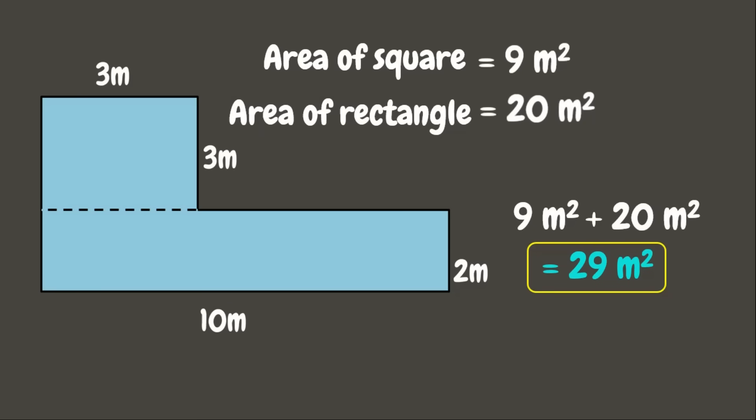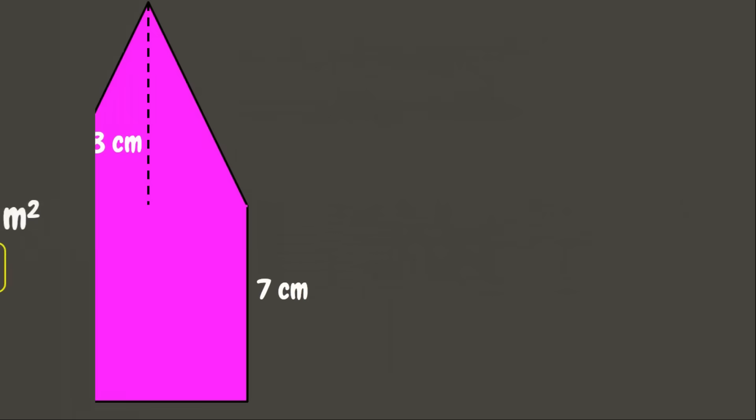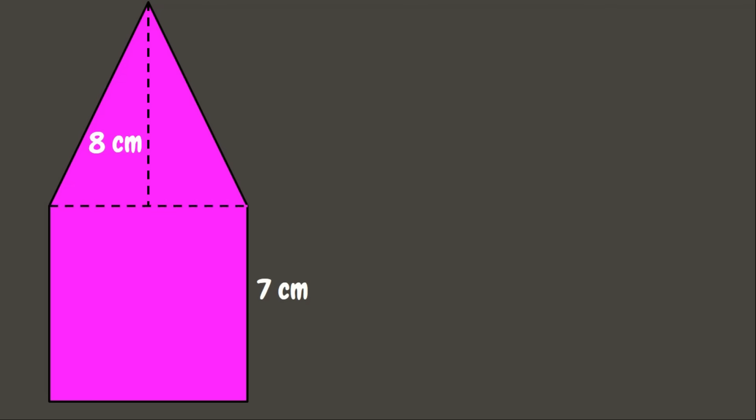Wonderful! Now let's look at another example. This time we have a different composite figure. The first thing to do is divide or separate it into basic shapes. Here we can divide it into two basic shapes: the triangle and the square.